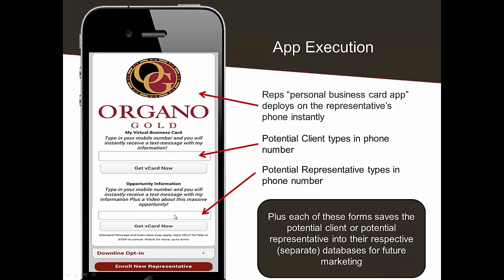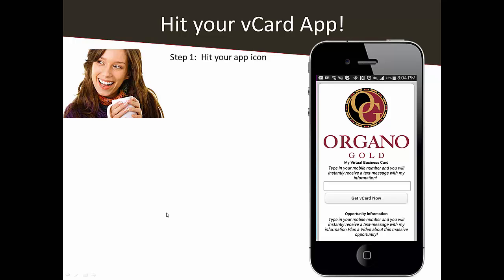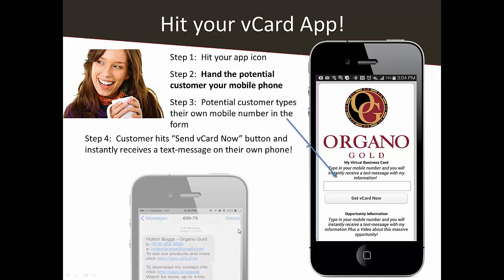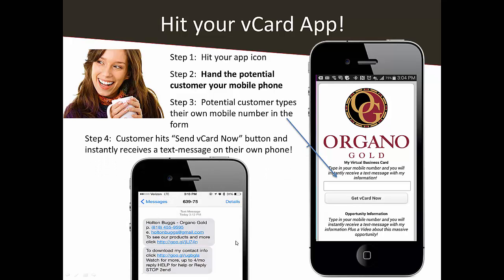The second form is if you're talking to somebody about the opportunity. When somebody types their mobile number in your phone and hits 'get vCard now,' they get two text messages on their own phone. The first text message has your information — your name, company, phone number, email address — and it says to see our products, click more. The second one is to save the contact information to their phone.